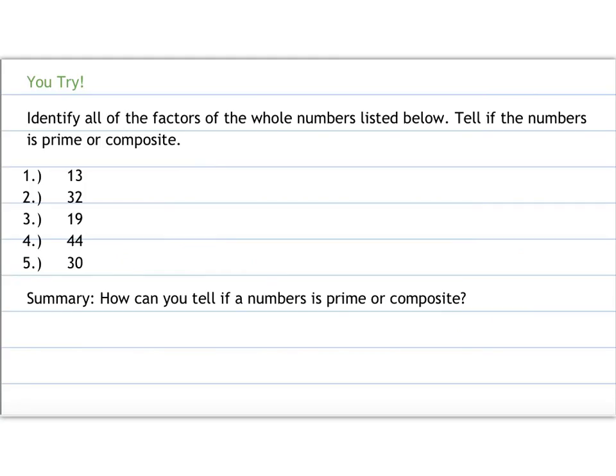All right, so now you try. We're going to look here at identifying all of the factors of the whole numbers listed below. Tell if the numbers is prime or composite. So you would want to give those a try. So 13, again you could try what numbers multiply to 13. We're not doing adding, 6 plus 7 is 13 but that's not a factor, it's not something that multiplies there. So I think it's only 1 times 13. I can't think of any other factors, so that's prime. You can pause here again and try on your own and not just get all the answers from me.